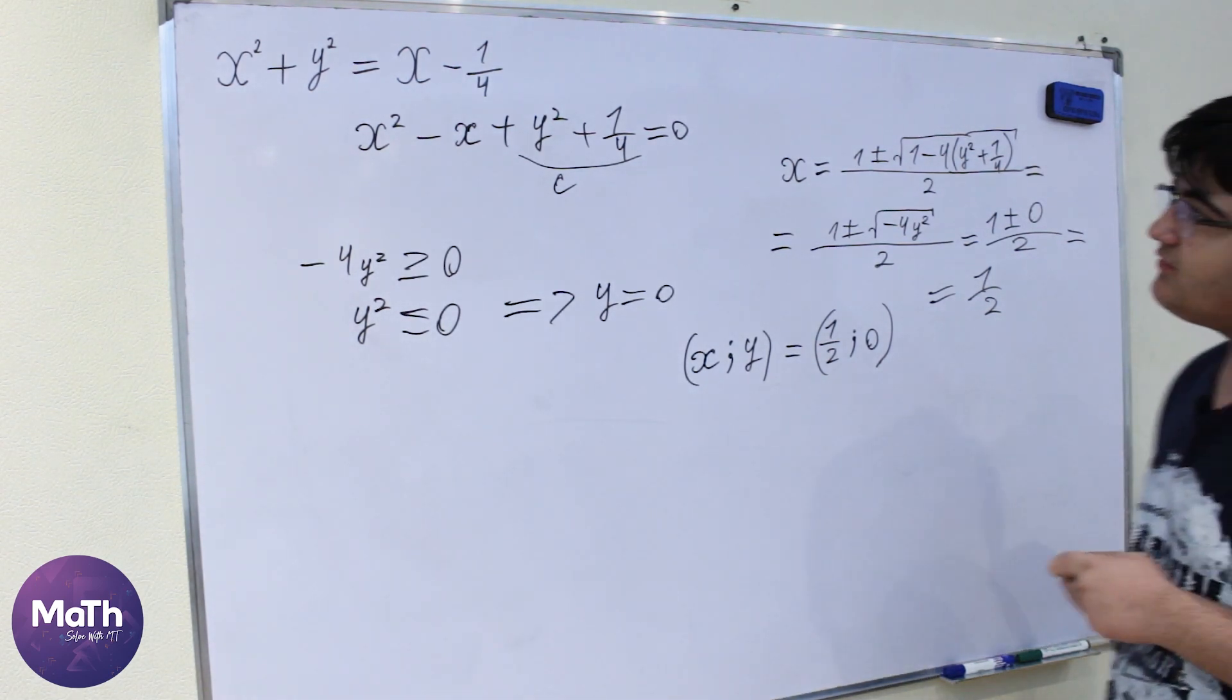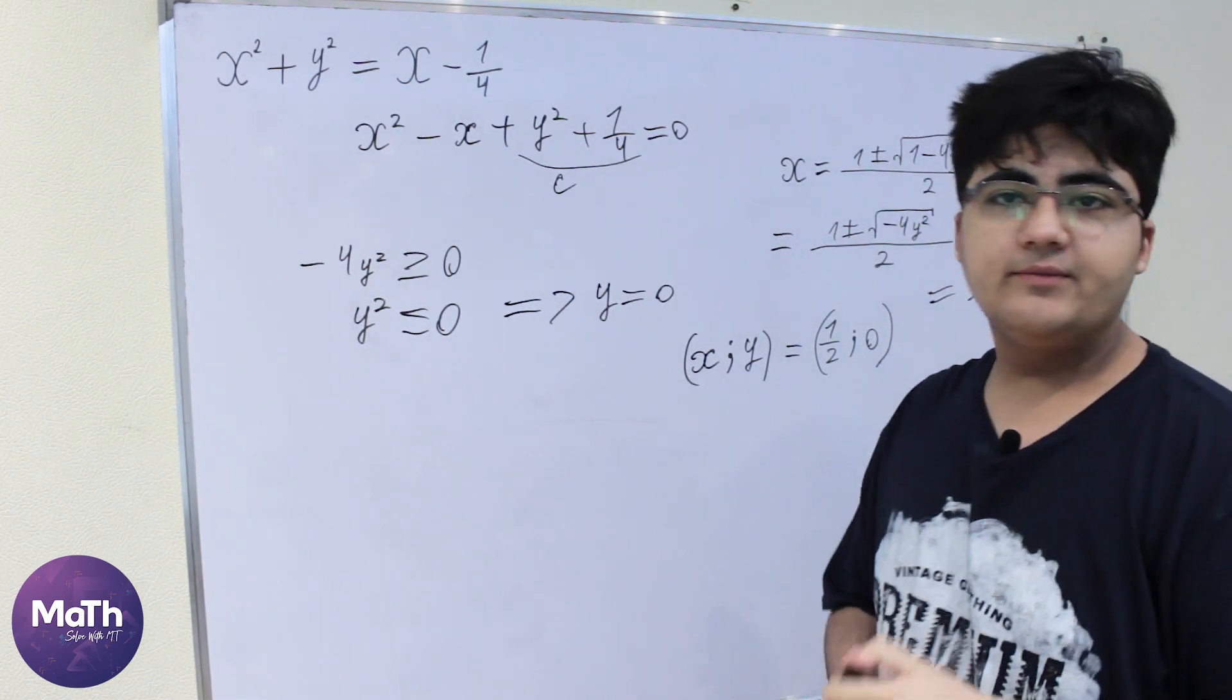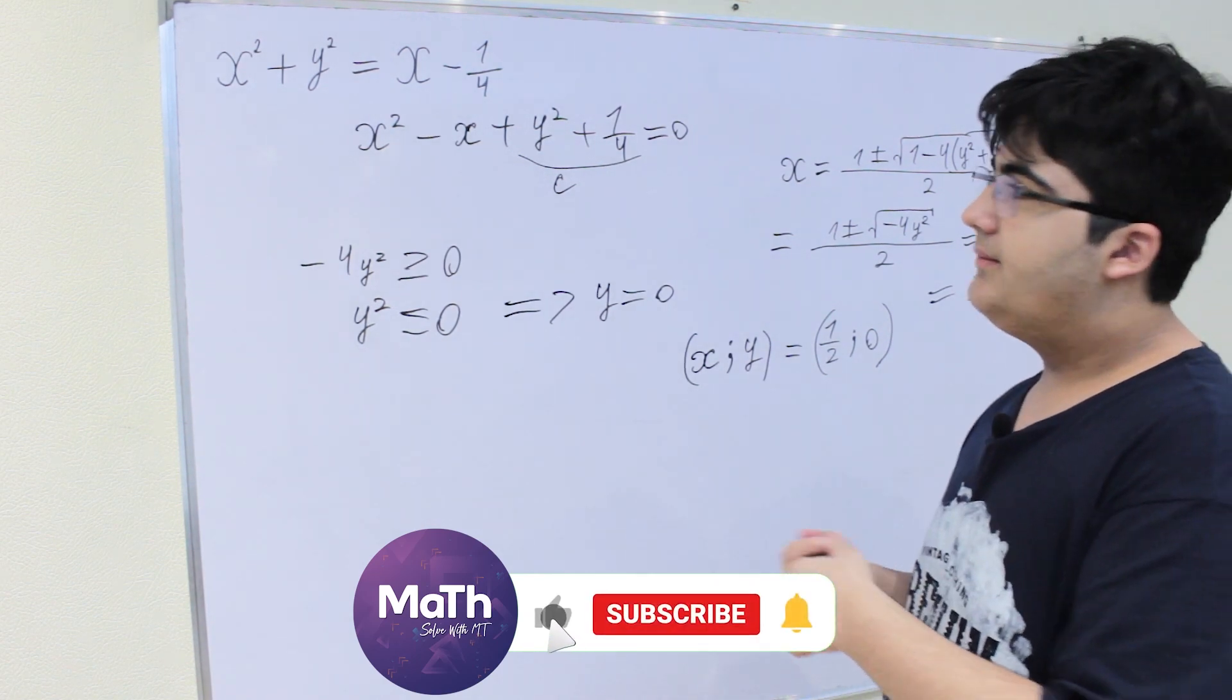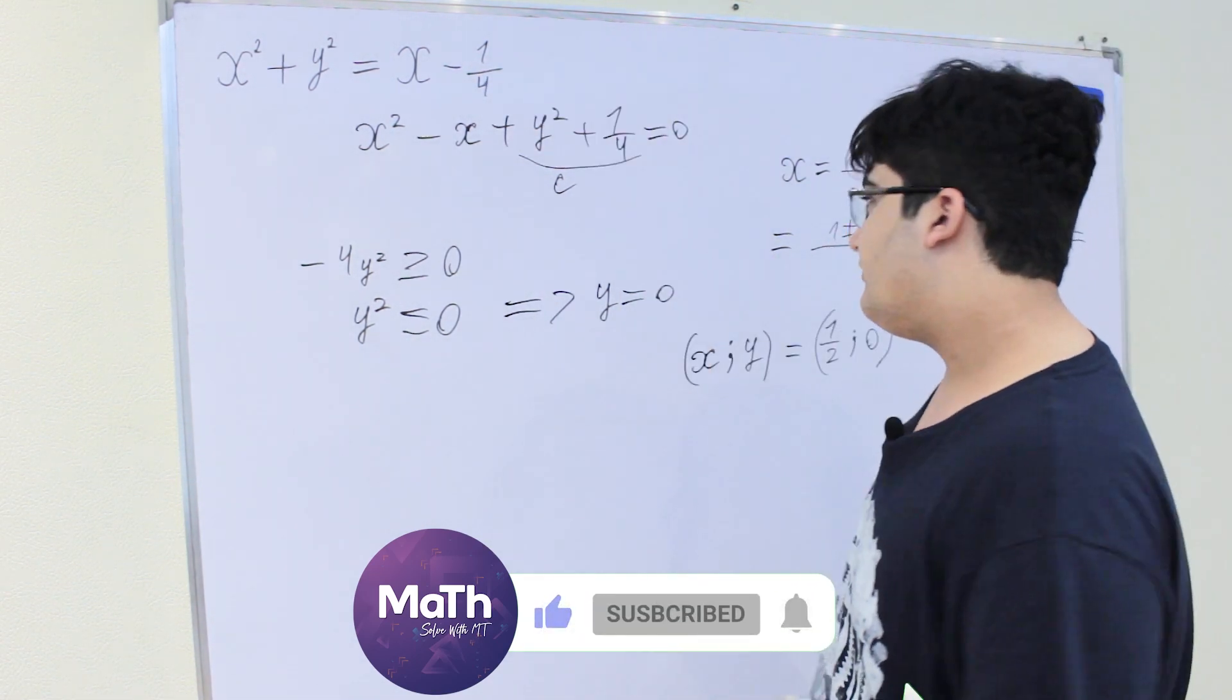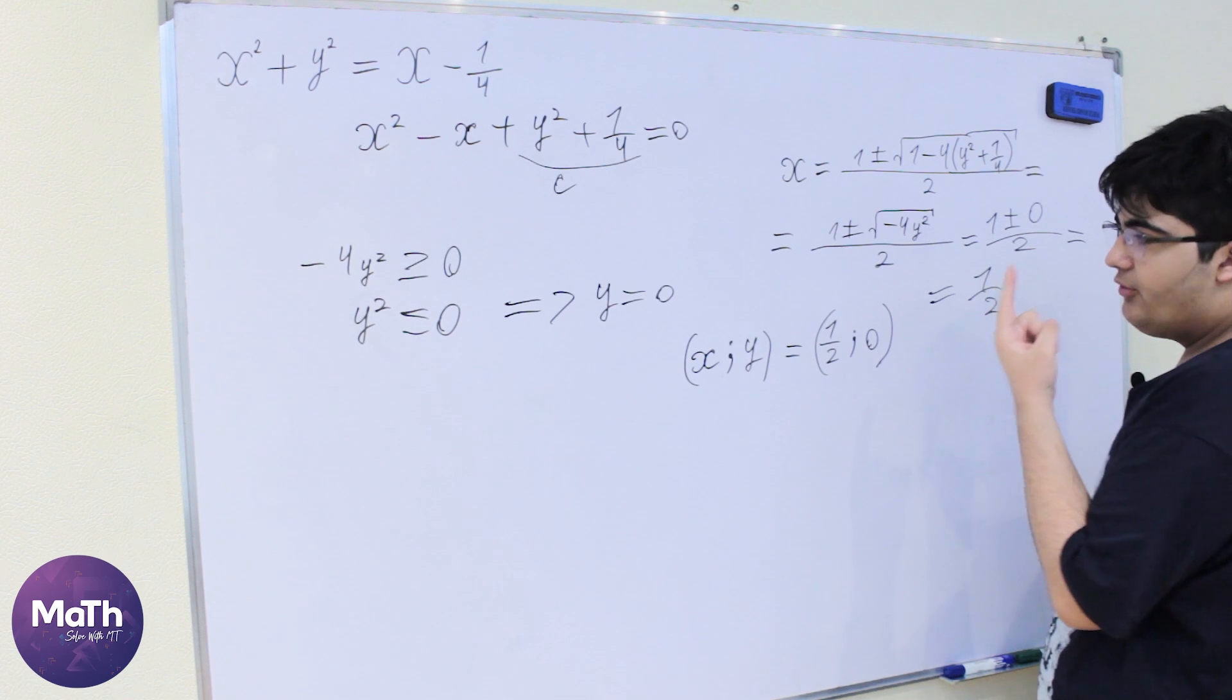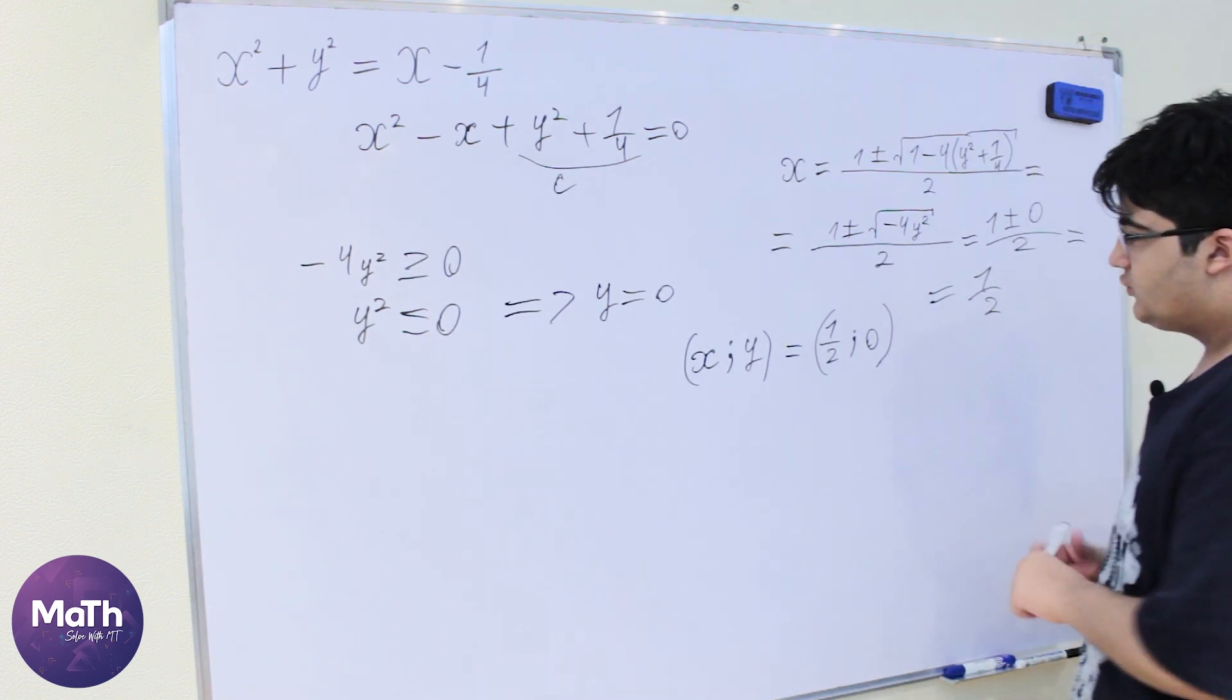So even if we put this equation here to like to Desmos there will be nothing like because there is nothing to graph. We can see here that we have here one point only, so this will be our answer.